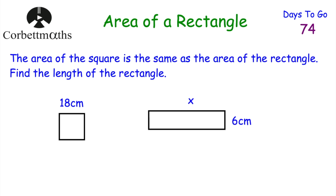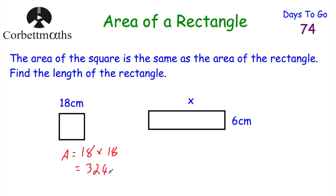We've been given a square and a rectangle whose areas are equal to each other, and we've been asked to find the length of the rectangle. Because they have the same area, let's find the area of the square: 18 times 18 equals 324 centimetres squared. So the area of the square is 324 centimetres squared.